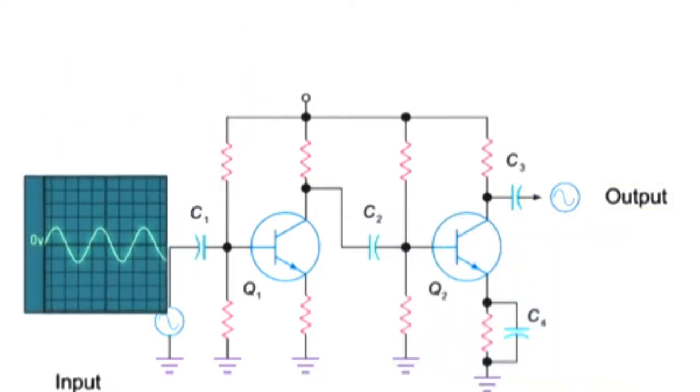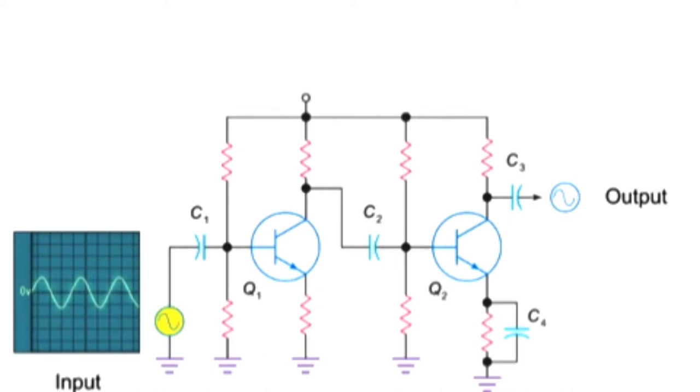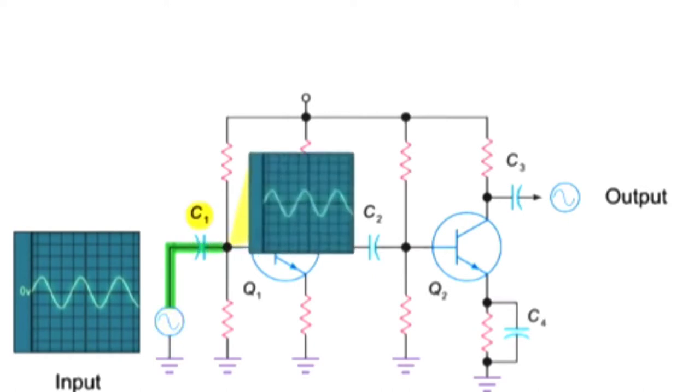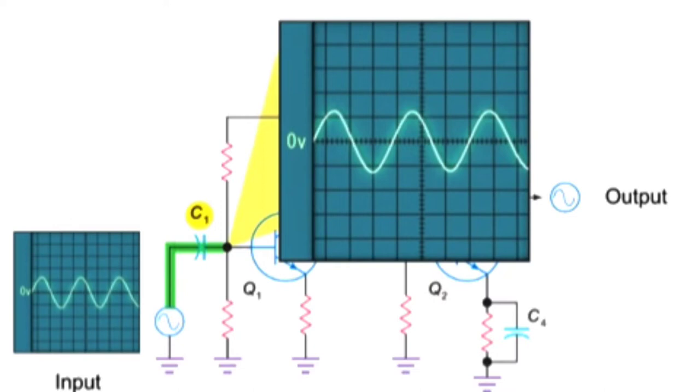The amplifying process begins with the input of an AC signal. Upon entering the amplifier, the signal passes through an initial coupling capacitor, C1, which will strip it of any DC voltage.